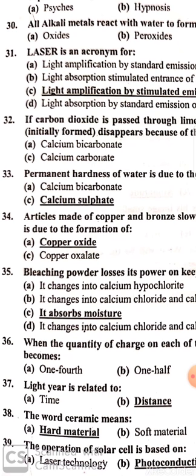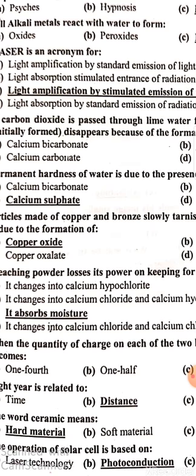The speed of light is approximately 300,000 kilometers per second, and when light travels for one year the distance is called a light year. The word ceramic means hard material. The operation of a solar cell is based on photoconductivity.